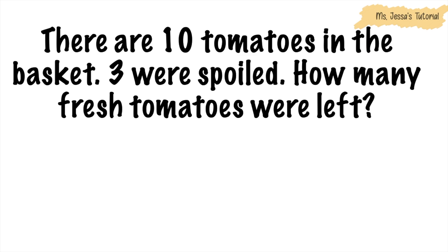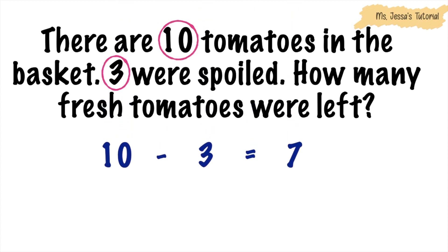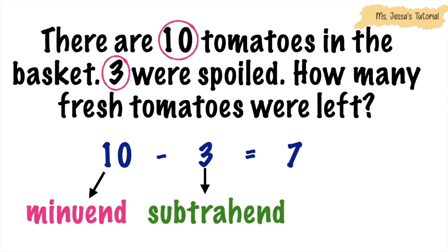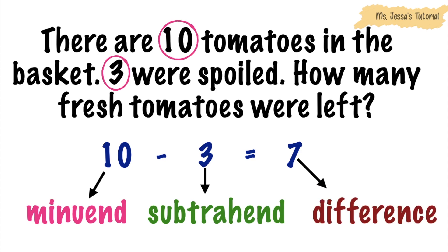To solve this problem, we must subtract 3 from 10. We will have 10 minus 3 is equal to 7, where 10 is what we call the minuend. Minuend is the total number of objects, while 3 is the subtrahend. Subtrahend is the total number of objects that you will take away from the minuend, and 7 is the difference. Difference is the answer in subtraction.